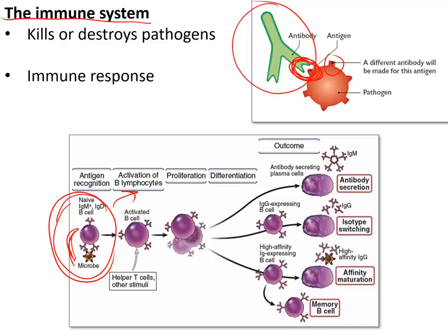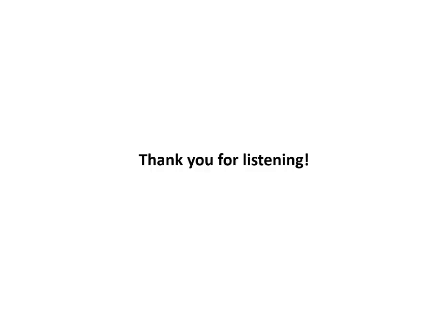When a pathogen sticks to the right lymphocyte, that lymphocyte becomes activated and makes millions of copies of itself, flooding the body with the right antibodies to kill that particular pathogen. Once the pathogen is eliminated, some of those lymphocytes remain as memory lymphocytes; the rest die as they are no longer needed. Next time we meet that same pathogen, the memory lymphocytes are ready to rapidly produce the right antibodies to kill the pathogen before it affects us again.